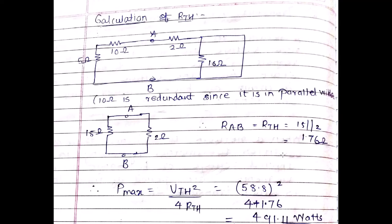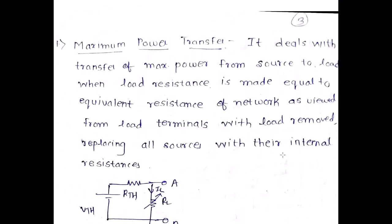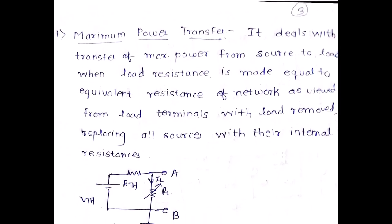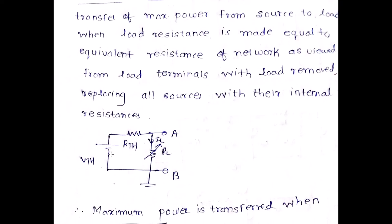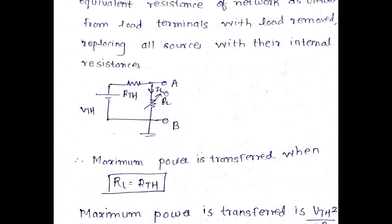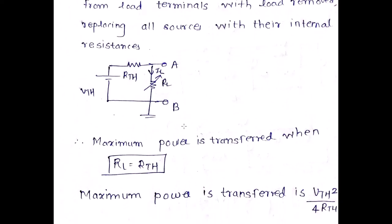To summarize: the Maximum Power Transfer Theorem states that maximum power can be transferred from the source to the load when the equivalent resistance from the AB terminal equals the resistance viewed from the AB terminal, with the voltage source shorted and the current source open-circuited. In this case, R_ab = Rth, and maximum power transfer = Vth² / (4 × Rth).